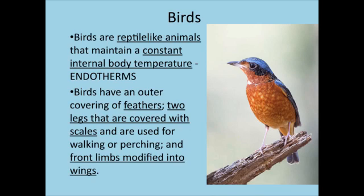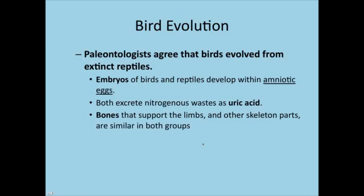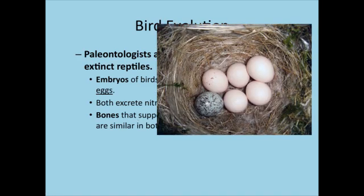Now we move on to birds. Birds are reptile-like animals — we say that a lot because of their legs; they have reptile-like legs. Birds are the first vertebrate group that can control their internal body temperature, so we call them endotherms. They are responsible for their own body temperature through metabolism. Birds are also unique in that they have feathers and front limbs that are modified into wings. Paleontologists generally agree that birds evolved from extinct reptiles, because birds also have the amniotic egg, similar nitrogenous waste called uric acid — a concentrated urine so they're not wasting water — and bones similar to reptiles that support against gravity.